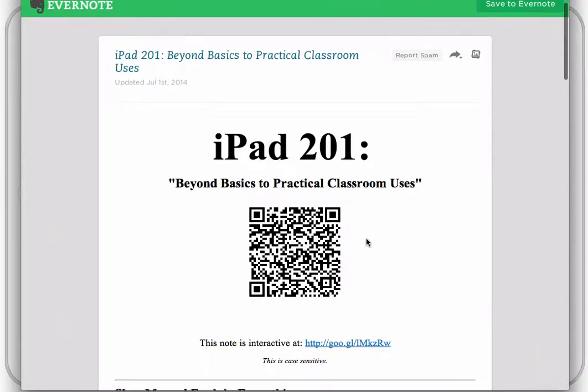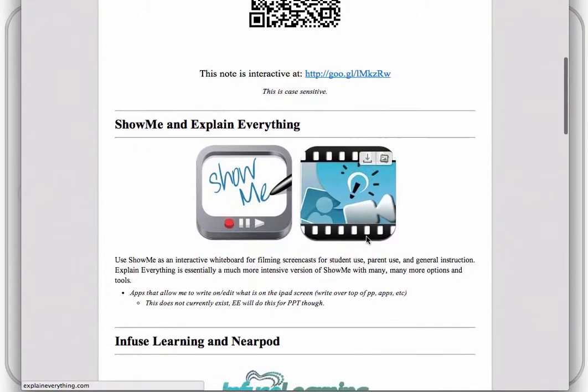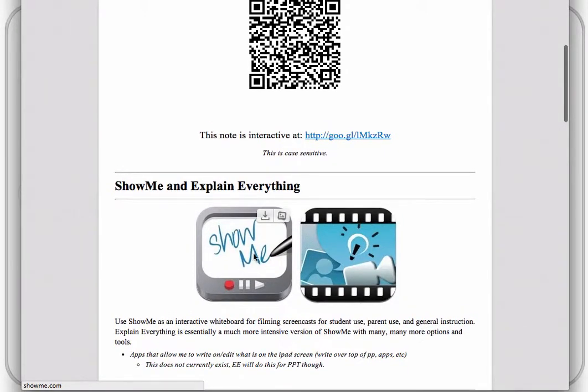The first thing we're going to look at is an app called Show Me. Now Show Me here, this is what the app looks like, is the one I was saying you could use tomorrow. Our next video will look at Explain Everything, which is the upgrade to this. But Show Me is an interactive whiteboard that helps you to film screencasts for student use, parent use, and general instruction. I like to tell people that Show Me is the app that will make you a superstar on your campus. Real quick, you become an administrator's dream teacher. You become a parent's dream teacher because of your communication and your ability to demonstrate student learning and what you're teaching in your class. Show Me is also really good for the flipped classroom. So let's go over to the iPad and look at Show Me.